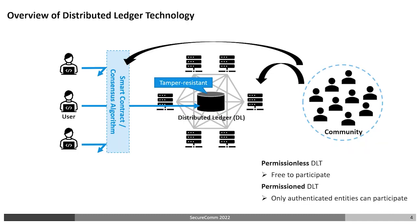Before getting into the main topic, we briefly explain distributed ledger technology. DLT is a technology that manages a tamper-resistant distributed ledger based on a consensus algorithm. The distributed ledger is operated by a specific community, which operates DLT nodes and manages smart contracts and consensus algorithms. Only operations agreed upon within this community are reflected in the distributed ledger. Depending on how this community is created, DLTs can be divided into two types.